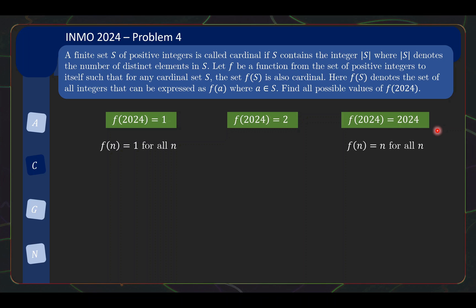And for f(2024) equals to 2024, obviously, the function you will consider is f(n) equals to n for all n. And that again is cardinal, I mean it's a valid function because if you start with a cardinal set, this function does nothing to the set and you will still end up with a cardinal set.